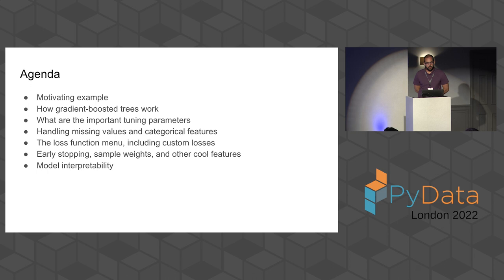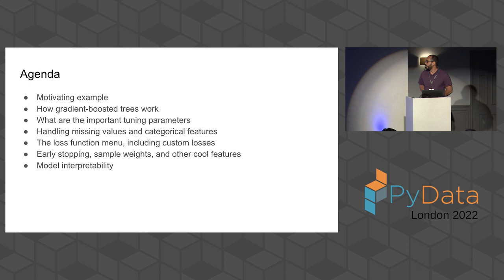So we have a packed agenda today — it's quite technical. We can look at the slides later. I want to start with an example that's going to motivate you to use LightGBM. Then I'm going to go over how gradient boosted trees work, what are some of the important parameters you can tune, how it handles missing values and categorical features, the loss function menu — including how you can create your own custom loss — some other cool features like early stopping and sample weights, and finally model interpretability.